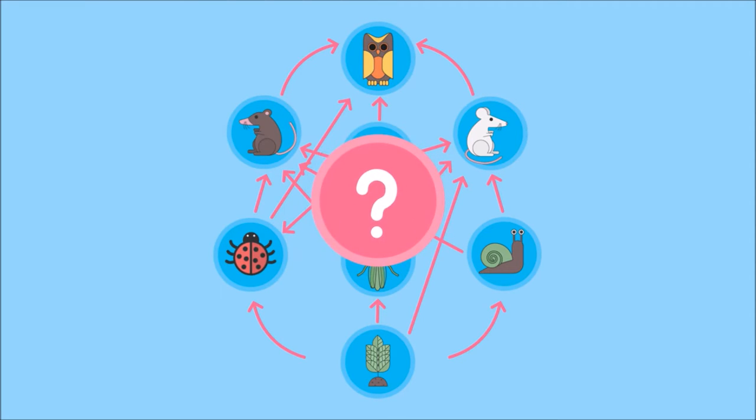So what happens if we remove one species from the food chain, perhaps if it went extinct? Well, to figure it out, we have to look at the whole food web.